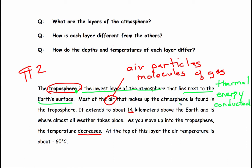Most of the air that makes up the atmosphere is found in the troposphere. It extends to about 14 kilometers. So this is another important key here, 14 kilometers above the Earth. And one more, it's where almost all weather takes place.